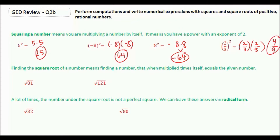Finding the square root of a number means finding a number that, when multiplied by itself, equals the given number. So the square root of 81 means we need to find a number that when you multiply it by itself gives you 81, and the answer is 9. The square root of 121 means what number times itself equals 121 — the answer is 11. A lot of times the number under the square root is not a perfect square.